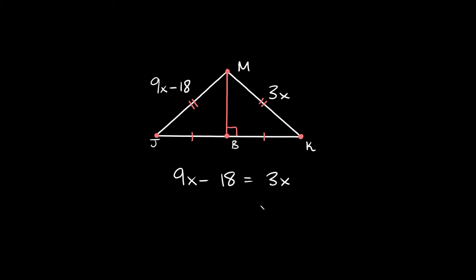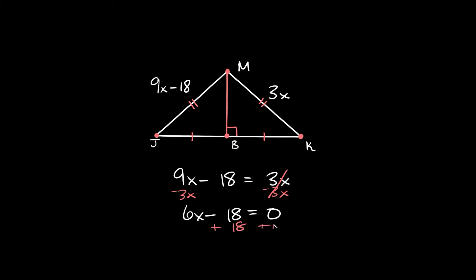To solve for x, we just need to get all the x terms on one side. Subtract 3x from both sides — that gives us 6x minus 18 equals 0. Then add 18 to both sides, so 6x equals 18.